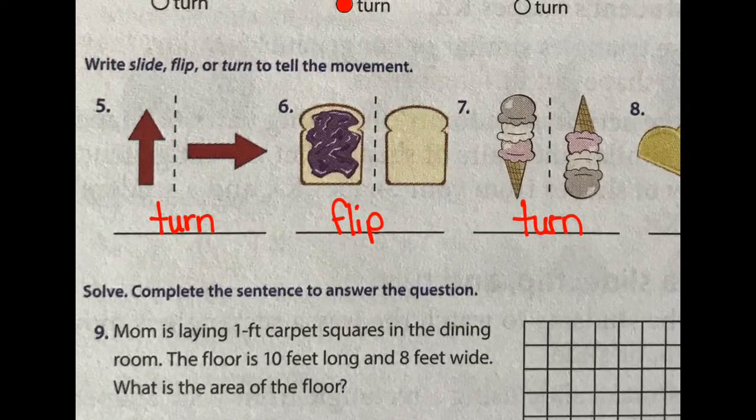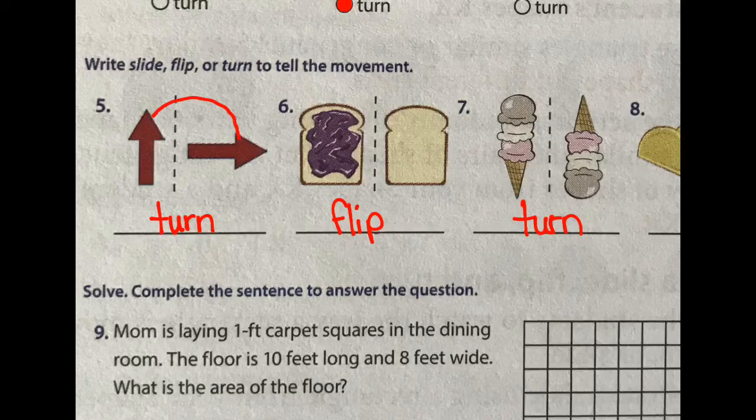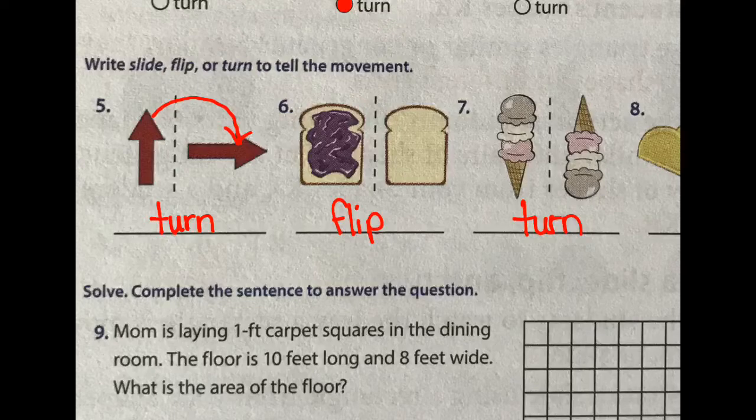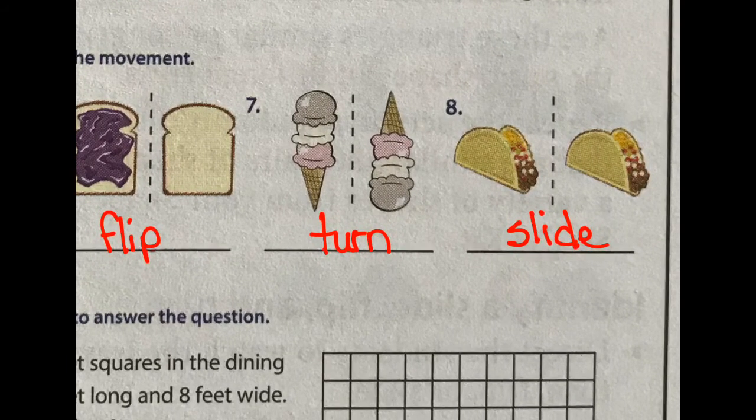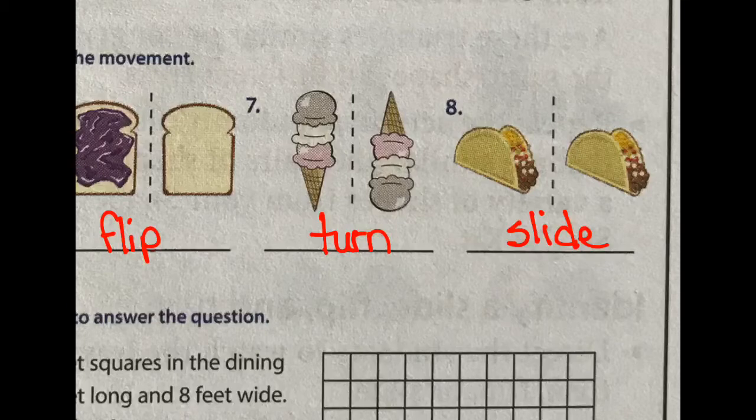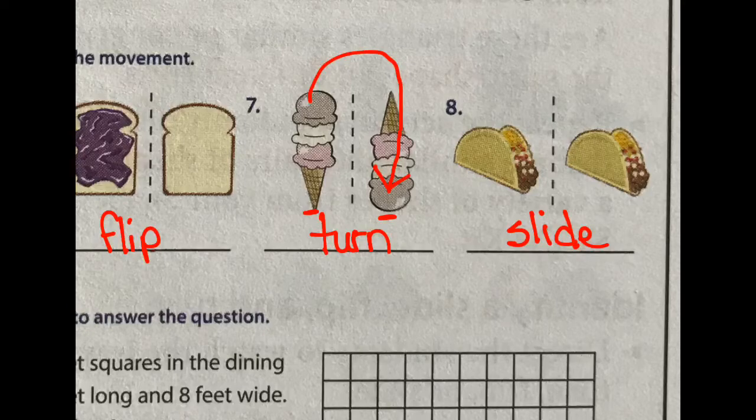Number five is turn because the arrow turned. The toast or the jelly sandwich, the jelly bread, has been flipped over. It's a flip. Number seven is a turn. Well, how can we tell the difference between a turn and a flip? Because we still see everything on the top of this ice cream cone exactly the same as on both sides. It's exactly, it's just been turned. That's all. And number eight, all they did was slide it across.